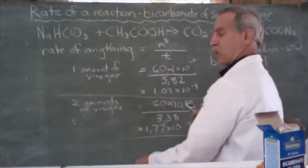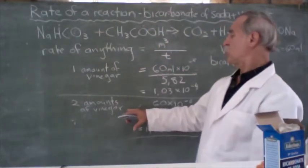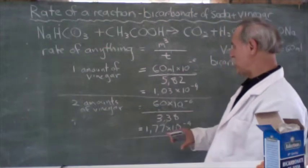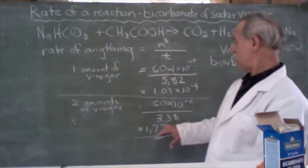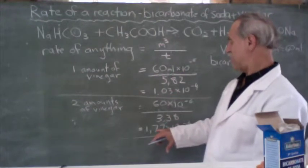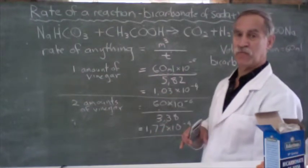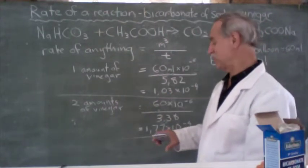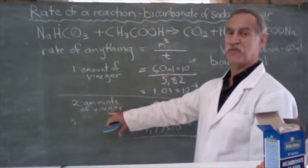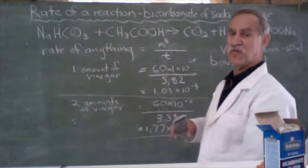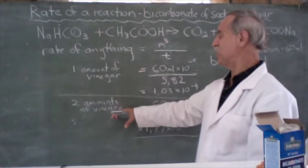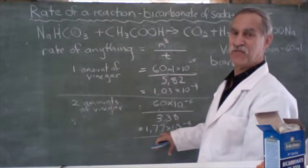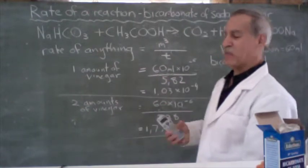So, that was with twice the concentration versus half the concentration. What happened to our rate of reaction? Well, look at this: 1.77 compared to 1.03. That is nearly three quarters more than the first case. So, we see that increasing our concentration of one of the reactants has increased the rate of the reaction. In other words, doubling the concentration of our vinegar has almost doubled the rate of this reaction.